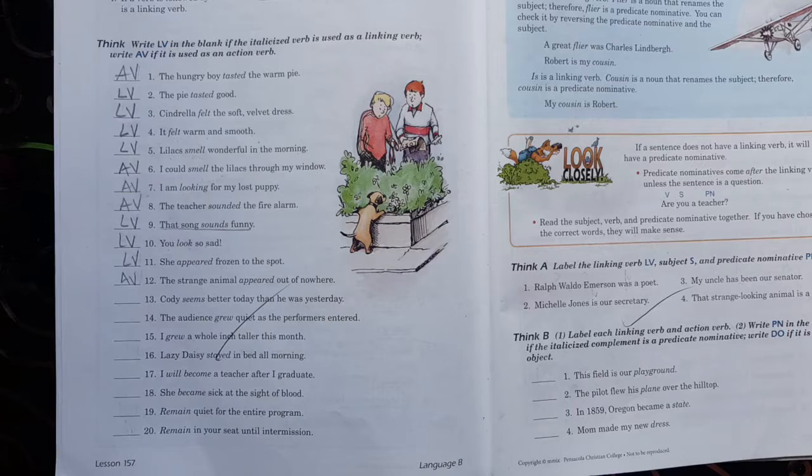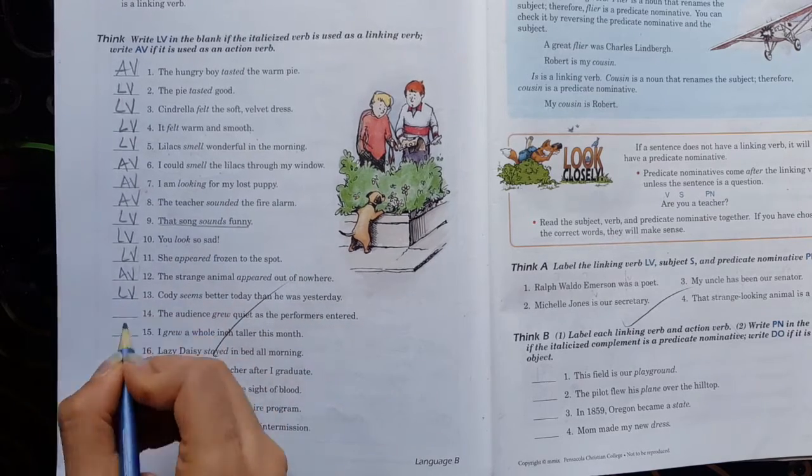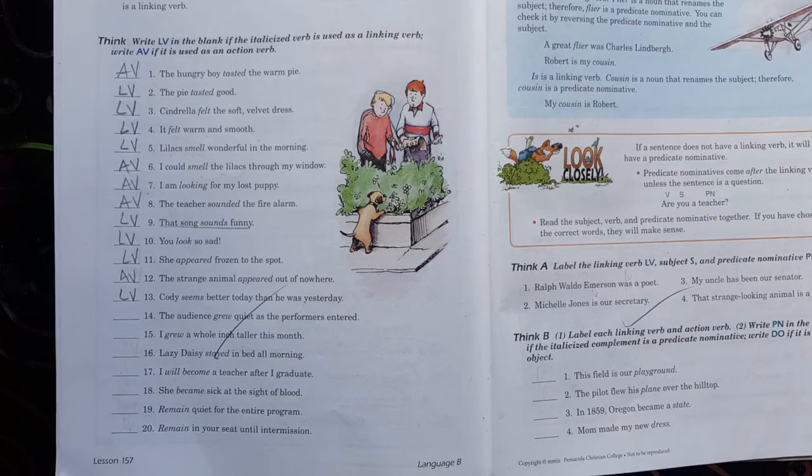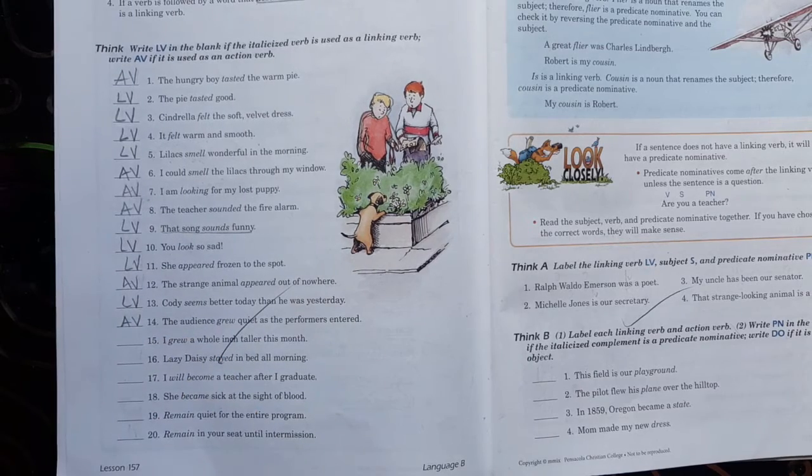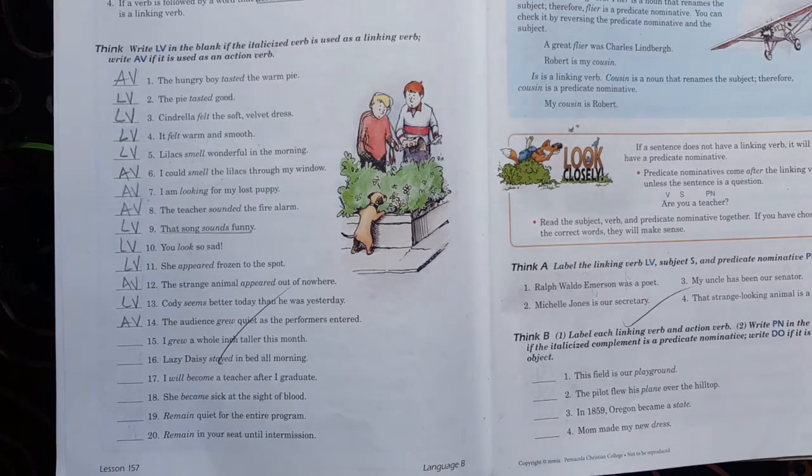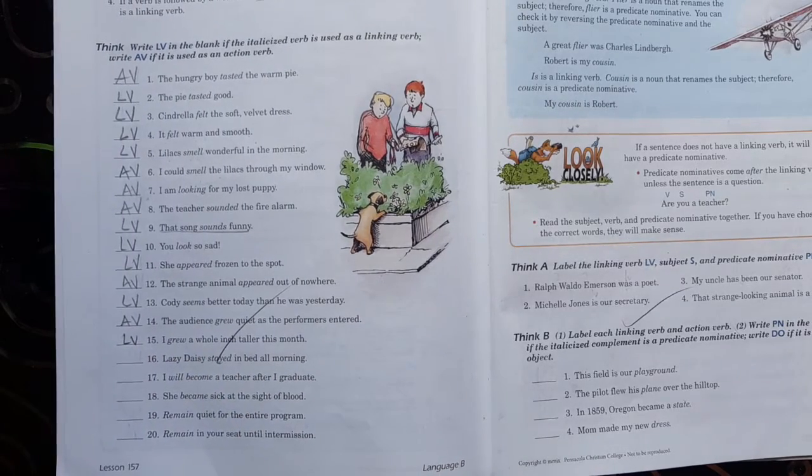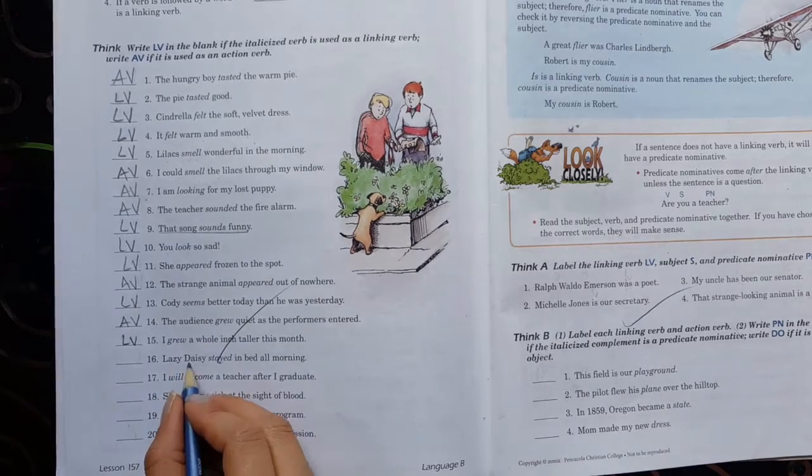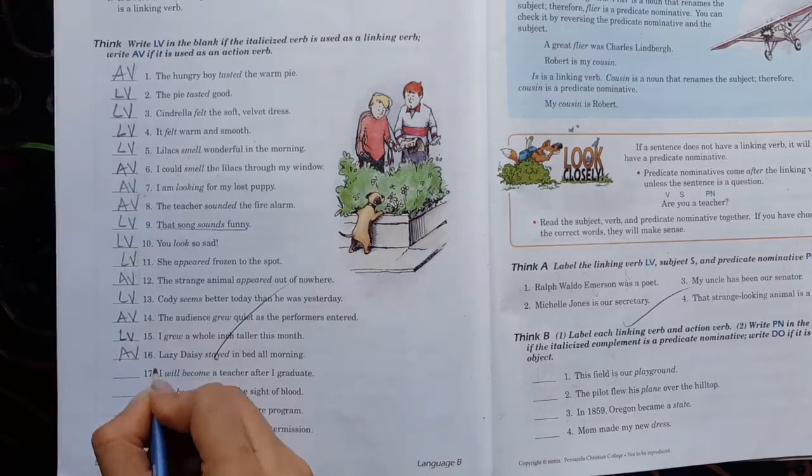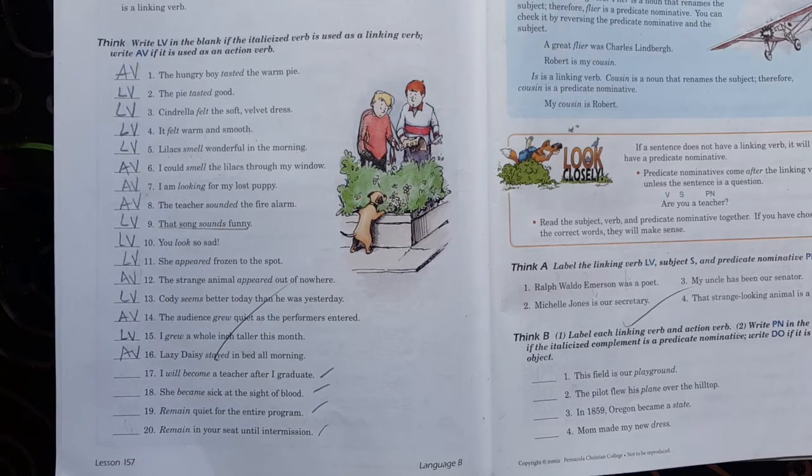Número 3. Si el sujeto está trabajando como acción del verbo, entonces tú sabes que eso es una acción. Jenny come ensalada. Pues eso es una acción. Pero si yo digo Jenny se siente enferma. Ah. Ahí estoy describiendo. Ese se siente se refiere a descripción. Y el número 4. Si un verbo es seguido por una palabra que describe o renombre al sujeto, entonces tú sabes que es un verbo conector. Describir. Cuando yo me encuentro que es un verbo, voy a describir, significa que es un verbo conector. Entonces, aquí vamos a darnos cuenta para entender cuándo es un linking verb o cuándo es un action verb. Dice, The hungry boy tasted the warm pie. El chico hambriento probó el pie caliente. ¿Eso es un qué? Action verb. Lo probó. Es una acción. Pilas acá. El pie sabía delicioso. Ese sí es un linking verb porque estoy describiendo. ¿Cómo sabía el pie? Pues delicioso. Cinderella felt the soft velvet dress. Cinderella sintió el suave vestido. Entonces lo está describiendo. Yo sentí caliente y suave. Lo estoy describiendo. Lilacs smell wonderful in the morning. Las lilas huelen delicioso en las mañanas. La estoy describiendo. Luego dice, Yo podría oler las lilacs a través de mi ventana. Ahí las estás describiendo. No. Solo es la acción que tú puedes hacer. Número siete. Yo estoy buscando mi perro perdido. Eso es una acción. La teacher tocó la alarma de fuego. Eso es una acción. Ahí no me están describiendo cómo es algo. Esa canción suena divertida. Ah, aquí ese es un linking verb porque me la está describiendo. Pilas. Tú te ves muy mal. Tú pareces muy mal. O tu apariencia es que estás muy mal. Ahí, ¿qué estoy haciendo? Describiendo. Linking verb. Ella apareció congelada en ese punto. ¿Cómo estaba? Congelada. Que es describir. Número doce. El extraño animal apareció afuera de algún lado. Esa es una acción. Apareció por ahí afuera. Número trece. Corey seems better today than he was yesterday. Corey se ve mejor hoy que como estaba ayer. Lo estoy describiendo. La audiencia creció suave mientras los artistas entraban. Eso es una acción. Yo crecí una inch completa este mes. O sea, estoy más alto, un centímetro más este mes. Estoy describiendo. Lazy Daisy stayed in bed all morning. Lazy Daisy se estuvo en la cama toda la mañana. Action verb.